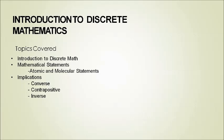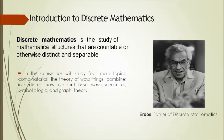The topics covered here are introduction to discrete math, mathematical statements, atomic and molecular statements, implications, converse, contrapositive, and inverse. Discrete math is the study of mathematical structures that are countable or otherwise distinct and separable. The four main topics are combinatorics, sequences, symbolic logic, and graph theory. By the way, the father of discrete mathematics is Erdős.